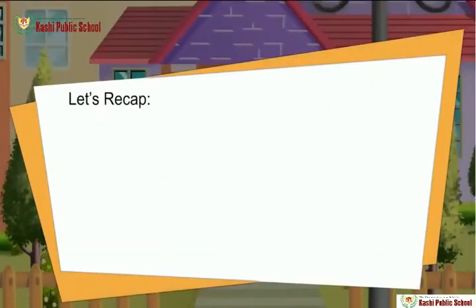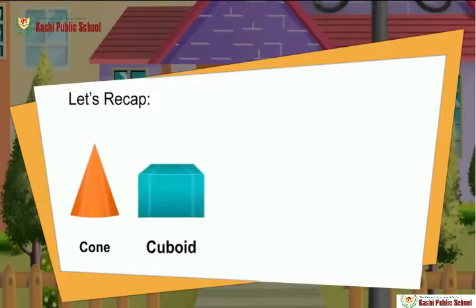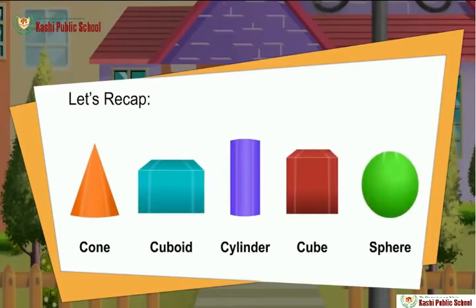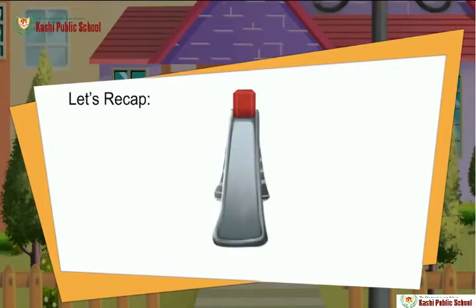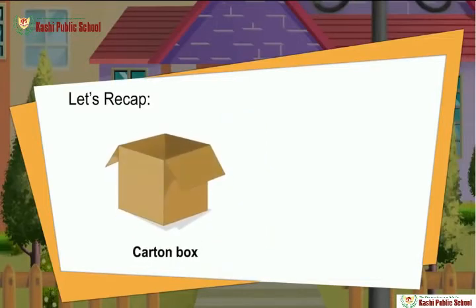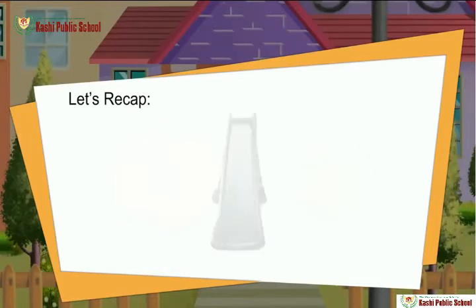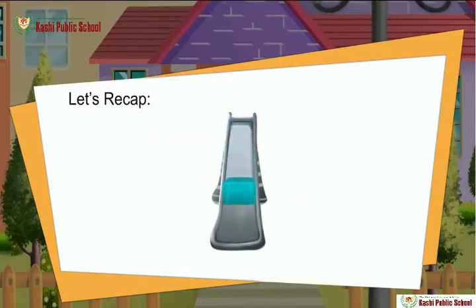Let's recap! Children, today we have seen solid objects which have their special names: cone, cuboid, cylinder, cube, and sphere. Cube can slide because it has flat faces — a carton box and a dice are all cubes. A cuboid also slides because it has flat faces too — a puzzle and a geometry box are all cuboids.